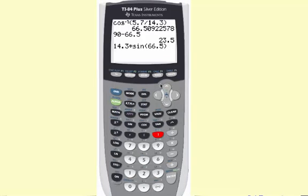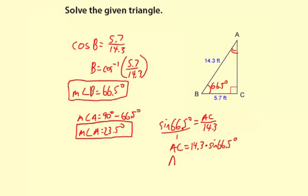And that we're going to have to calculate on the calculator. So there it is. 14.3 times the sine of 66.5 degrees. 13.113. We'll just round it to 13.1. And notice I'm going to include the units there. 13.1 feet. Okay, the triangle is now solved. We found the two unknown angles and the unknown side.